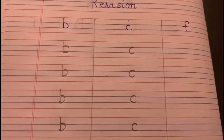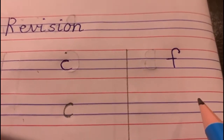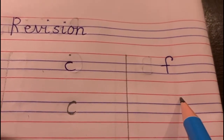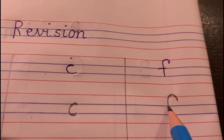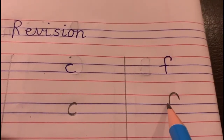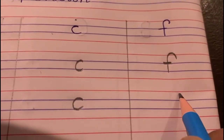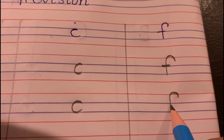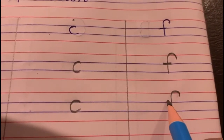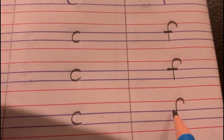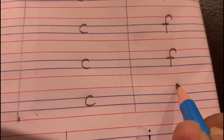Now moving to letter F. When we write F, we start from the red line, make a bumper T, make a straight line down to the second blue line, then a sleeping line — F! F says 'f'. Children, remember, if you do neat work your mama is going to give you a star!